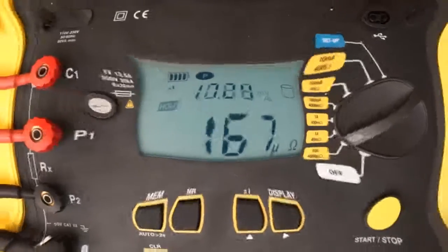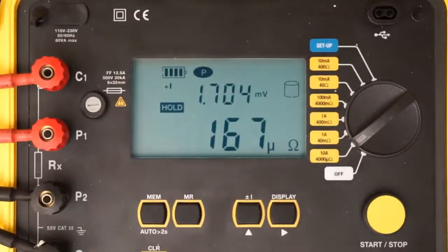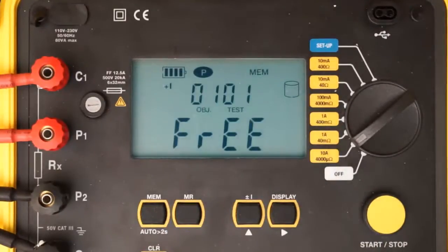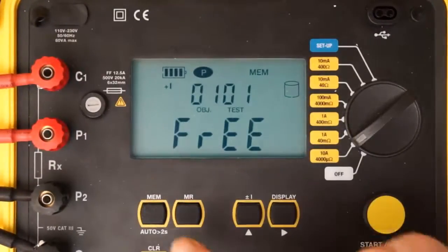To save the stopped test in the instrument's memory, press the memory button. This displays the default object number and test number under which this test will be saved. An object can contain multiple tests, similar to a folder containing multiple files. You can accept the displayed object and test numbers, or change them by pressing the up button, and then using the up and right buttons to make changes. To save the test to memory, press the memory button and hold it down until the word done appears.